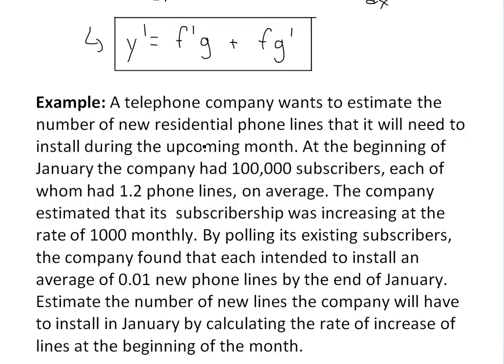A telephone company wants to estimate the number of new residential phone lines that it will need to install during the upcoming month. At the beginning of January, the company had 100,000 subscribers, each of whom had on average 1.2 phone lines.